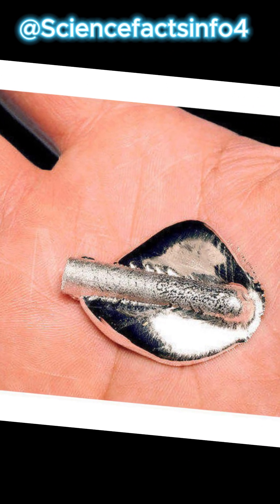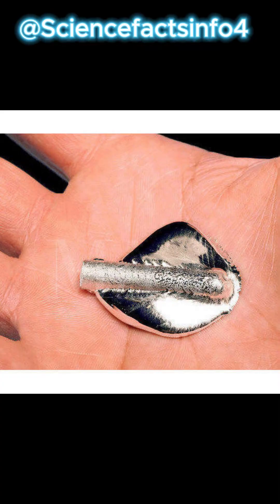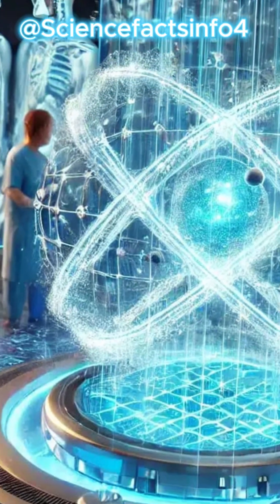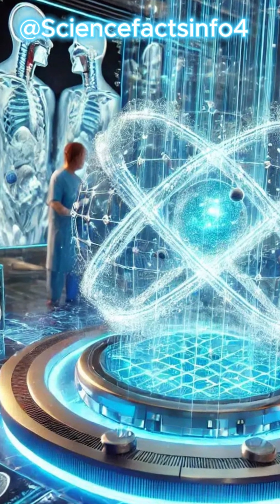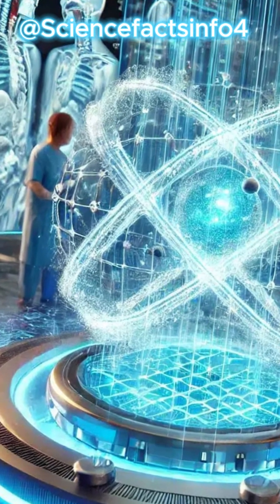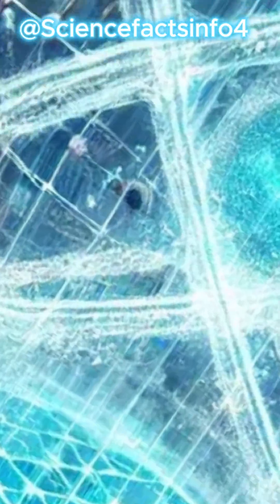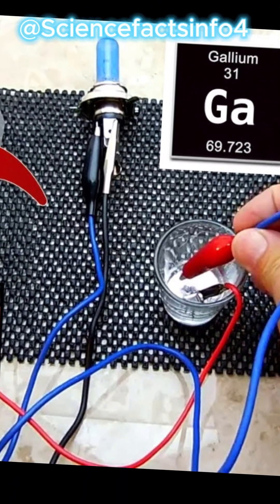But here's where it gets even crazier: when heated to 2204 degrees Celsius (3999 degrees Fahrenheit), gallium boils like water, turning into vapor. This strange metal is used in electronics, solar panels, and even medical imaging.